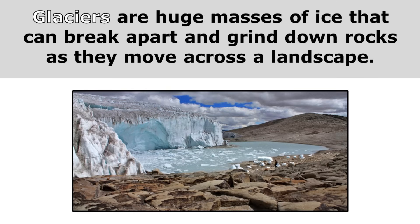Glaciers are huge masses of ice that can break apart and grind down rocks as they move across a landscape. Just for scale, there are some people right there in the picture, and you can see how big that glacier is. Glaciers move across land, and when something that big moves across the land, it's going to break down and weather the rocks in its path.